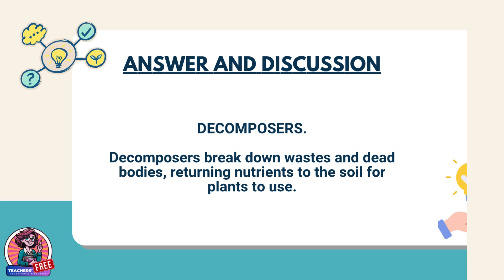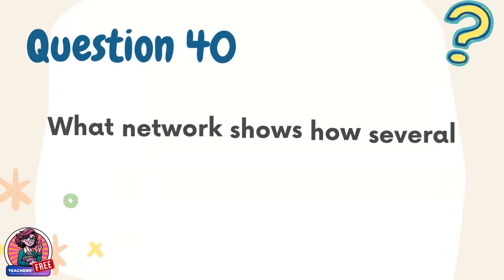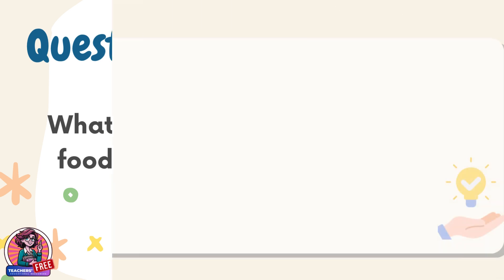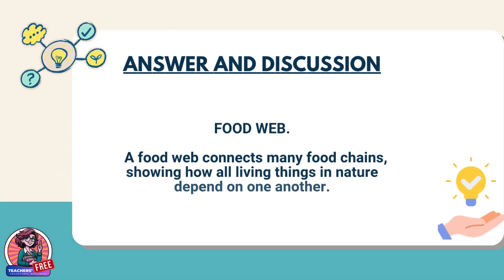Question 40. What network shows how several food chains are linked together in an ecosystem? Answer: Food web. A food web connects many food chains, showing how all living things in nature depend on one another.